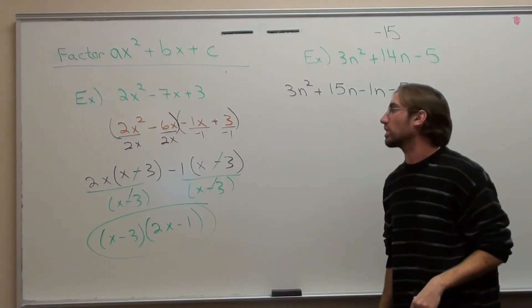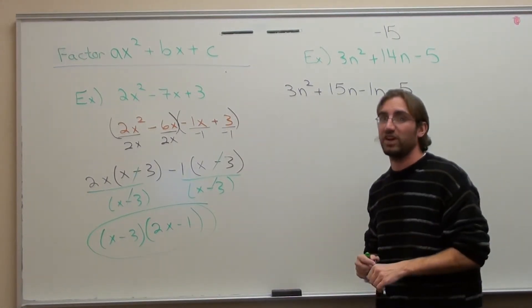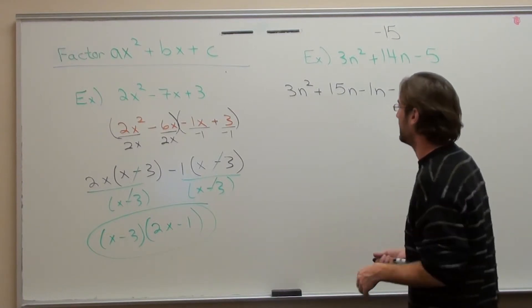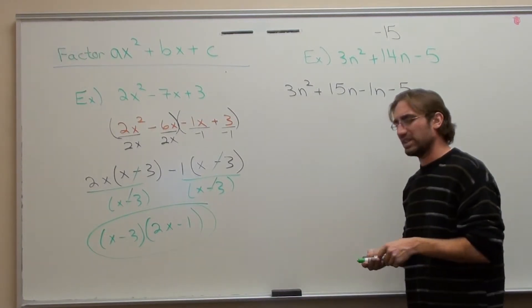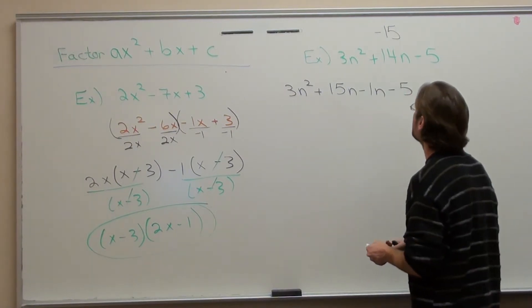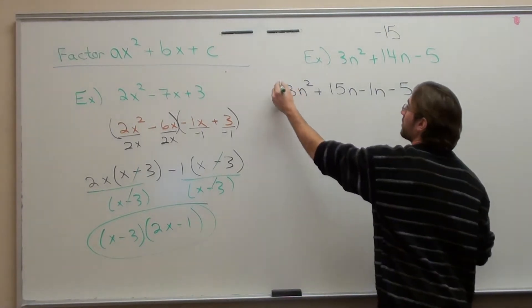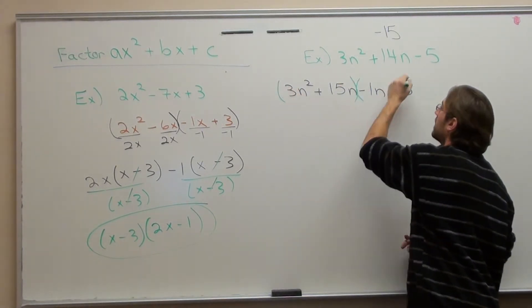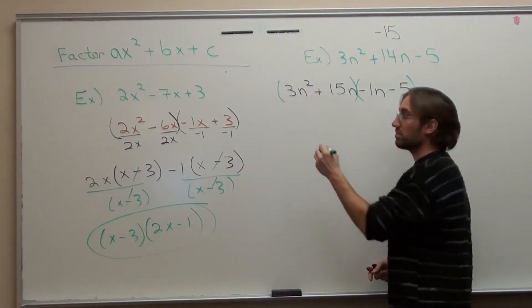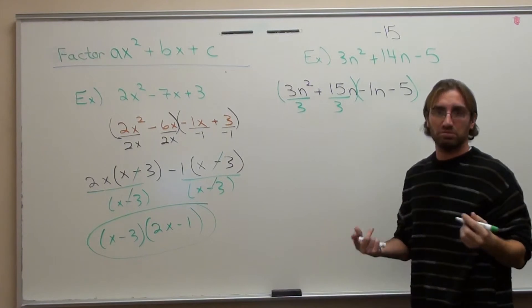So 14n I'm going to rewrite as 15n - 1n. And the reason why is because 15 times -1 is -15 but it adds up to be 14. Subtract 5. Now some of you are going to say, that's too much work. If you can do it in your head, do it in your head. That's perfectly fine. But if you can't, then you need some sort of system to base it on. Initially it's difficult but you get used to it. You have to practice it though.